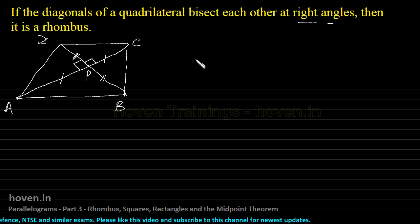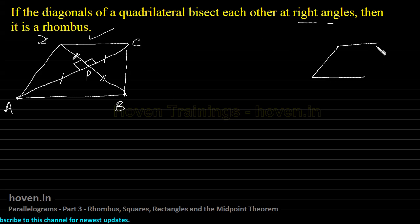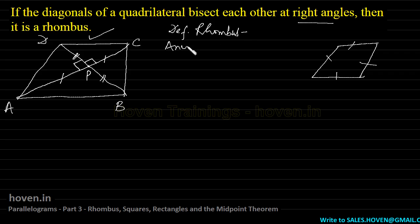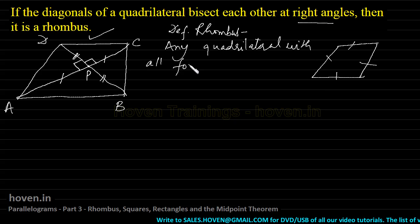We have to prove that such a quadrilateral is a rhombus. Now, what is a rhombus? A rhombus is any quadrilateral in which all four sides are equal to each other.